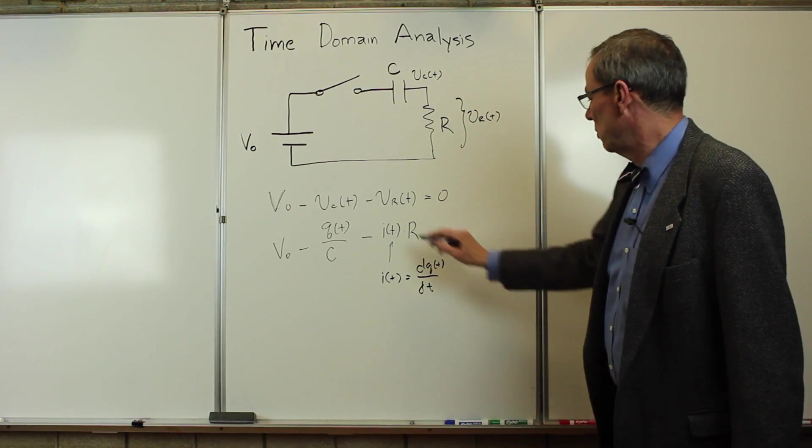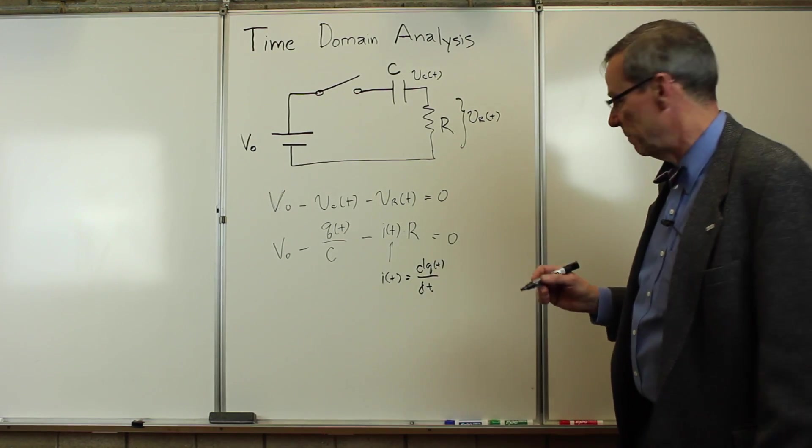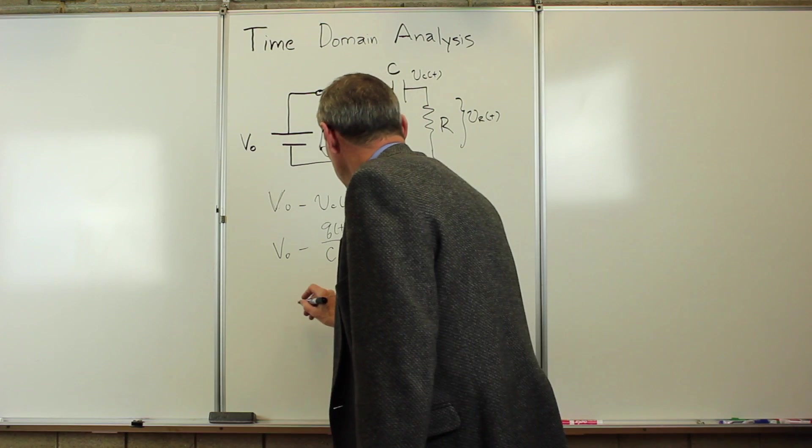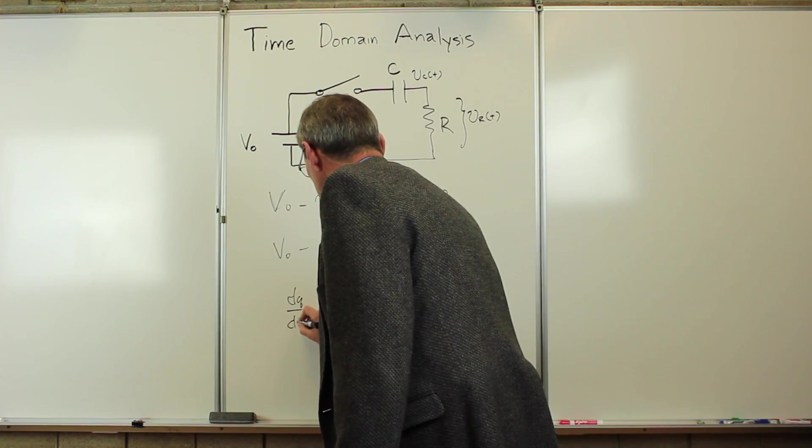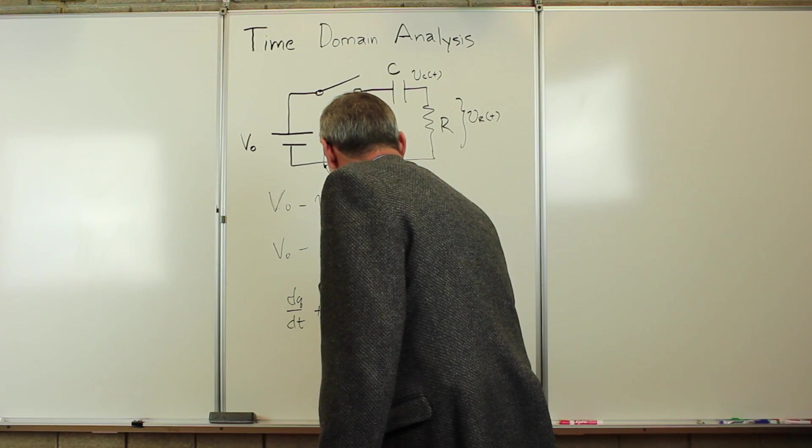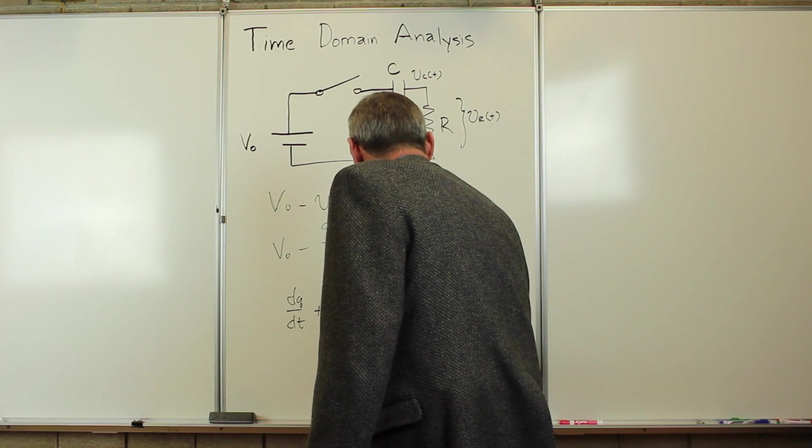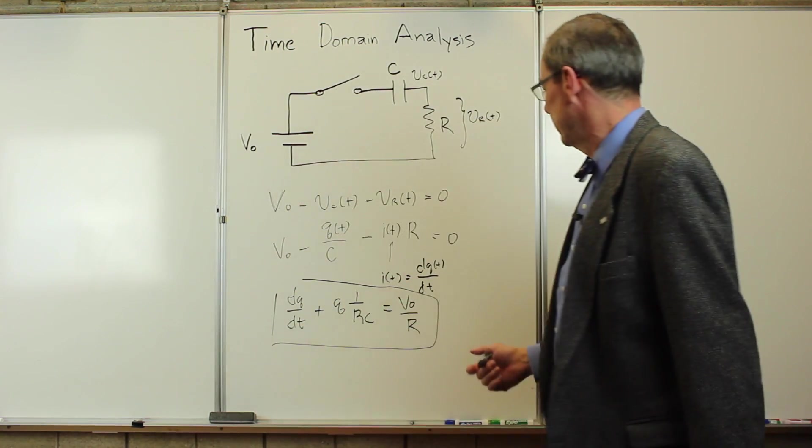So that means we can put this in here, and we'll have a first order differential equation for charge as a function of time. Let's go ahead and do that. I'm going to rewrite this. So I'm going to write dQ/dt plus Q times 1 over RC equals V0 over R. We get an equation that looks like that.